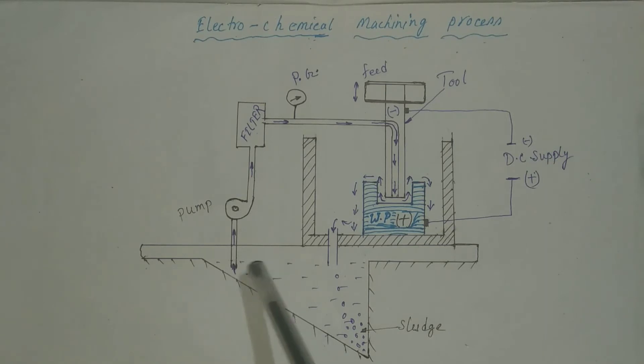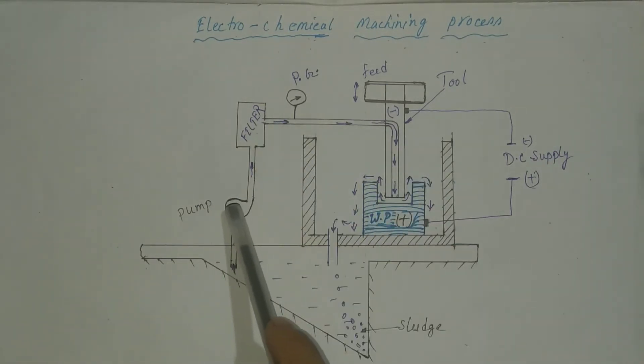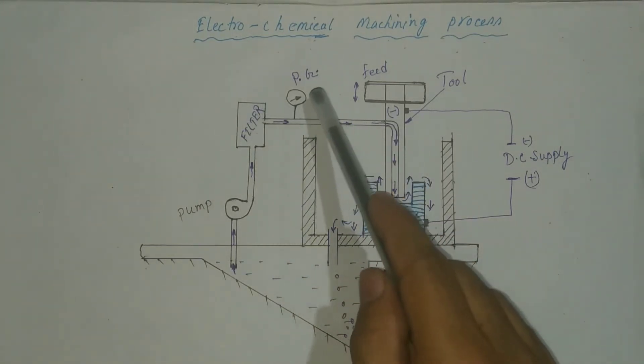The electrolytes are sent through this pump to the filter. This is pump. This is filter. This is pressure gauge.